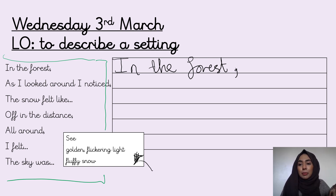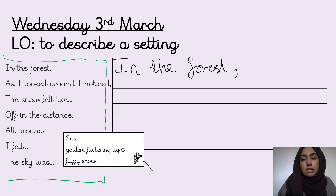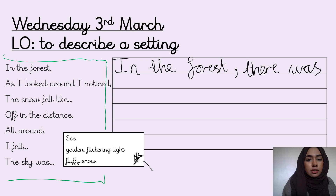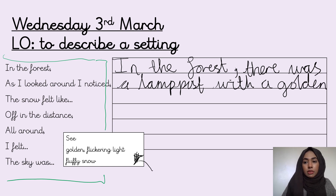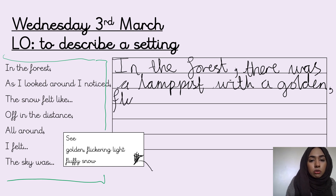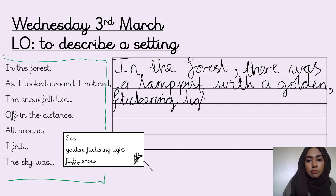Another word for light up is 'illuminated.' Illuminated — it's just another word for light up. So I'm going to write my sentence. In the forest, there was a lamppost. It had a golden — golden is an adjective — I need a comma because I'm using an expanded noun phrase, because I'm saying that the light is also flickering, which is another adjective to describe the light. So: golden, flickering, light.